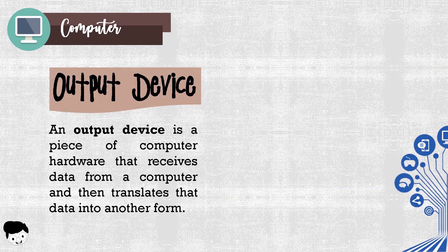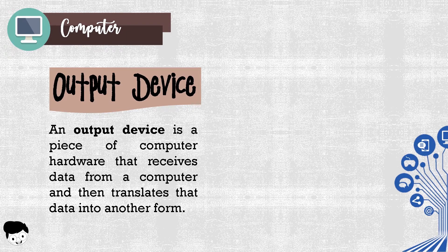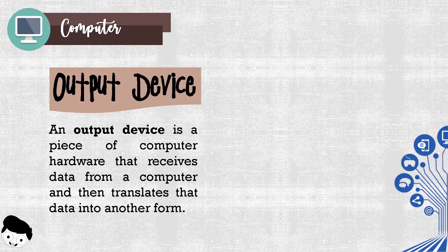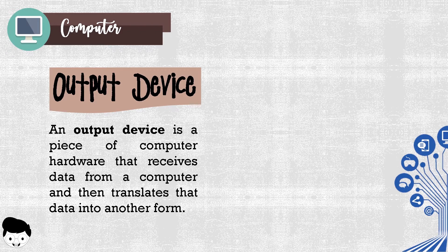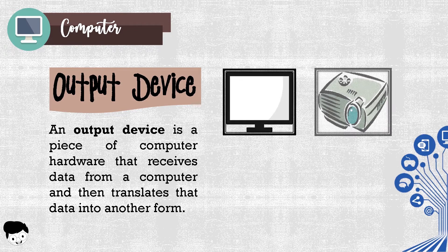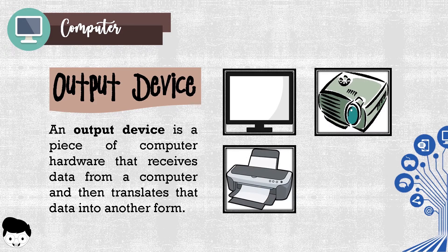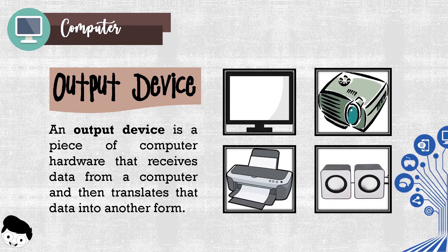Output device. An output device is a piece of computer hardware that receives data from a computer and then translates that data into another form. It transports data to one or more computer users. These are the examples of output devices: monitor, projector, printer, and speakers.